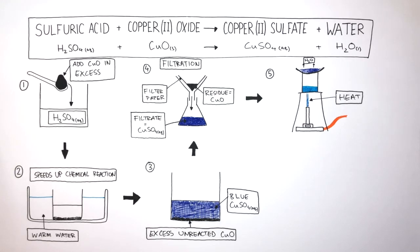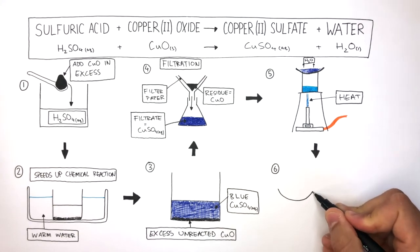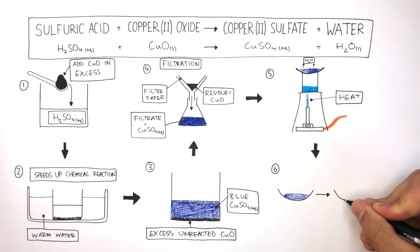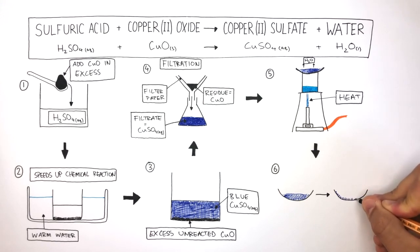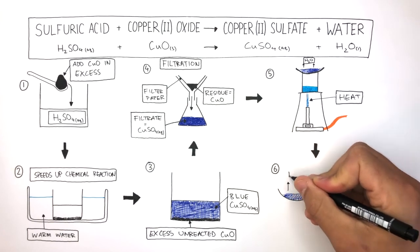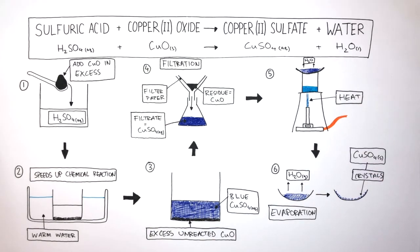You stop using the Bunsen burner when crystals start forming at the edge of the solution. In the final stage, we now have an evaporating dish containing concentrated copper sulfate solution. We leave this evaporating dish for a few days, which will allow the water to evaporate. This will allow copper sulfate crystals to form inside the evaporating dish. The liquid water inside the copper sulfate solution turns into water vapor — this is evaporation — and then pure crystals of copper sulfate form, which is crystallization.